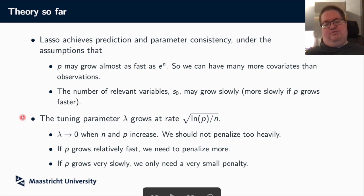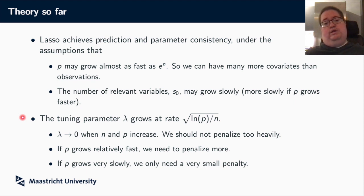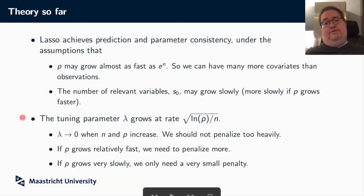We also had some restrictions on the tuning parameter. In particular, we looked at the rate at which it should grow, where we saw two things. First, lambda cannot be too large, so it should go to zero when n and p increase. Otherwise, you will have a bias which does not disappear when you penalize too heavily. And if p, the number of variables in your model, is large, then you should penalize more heavily than if the number is only small.